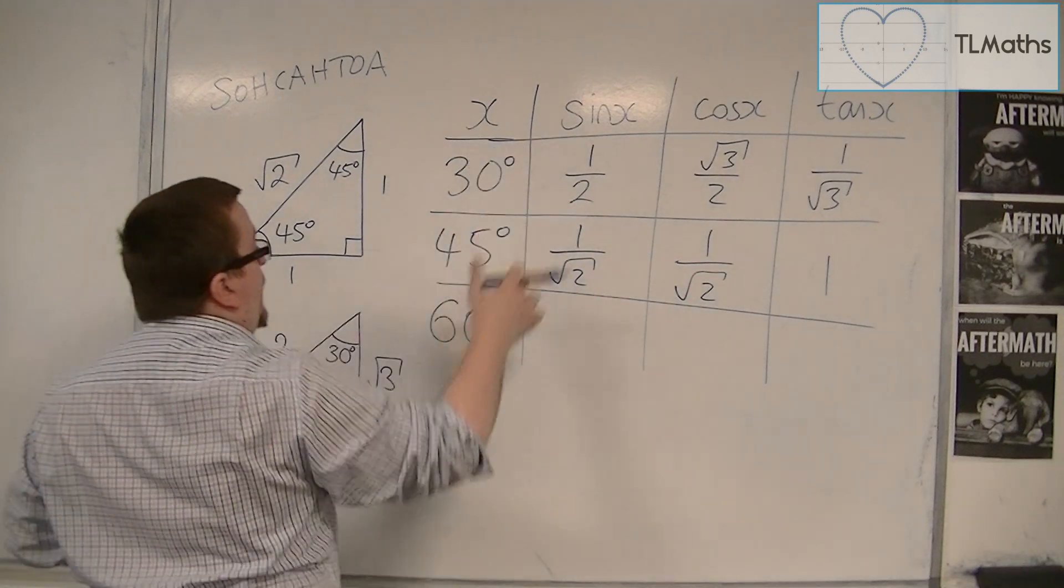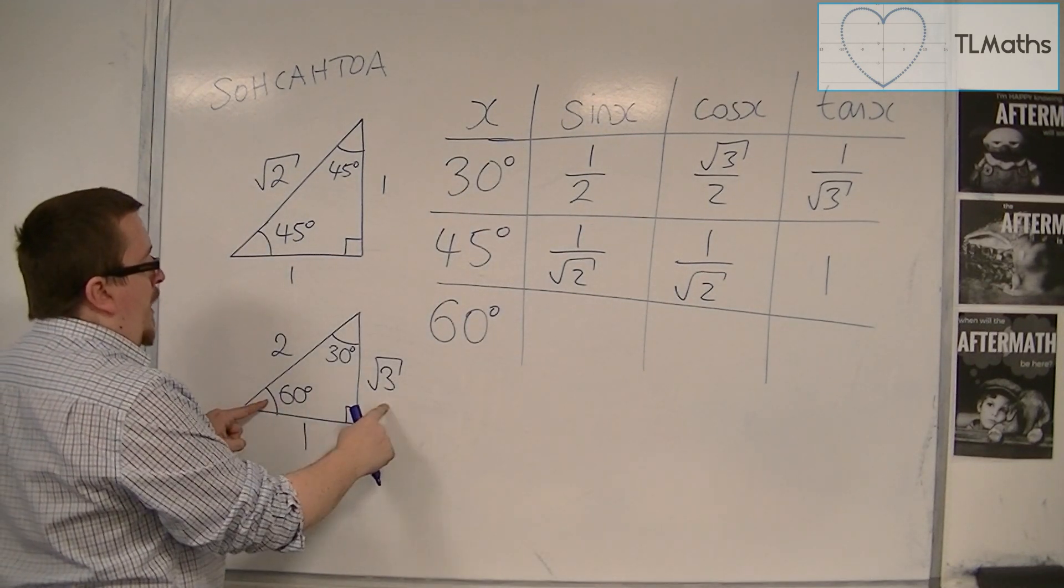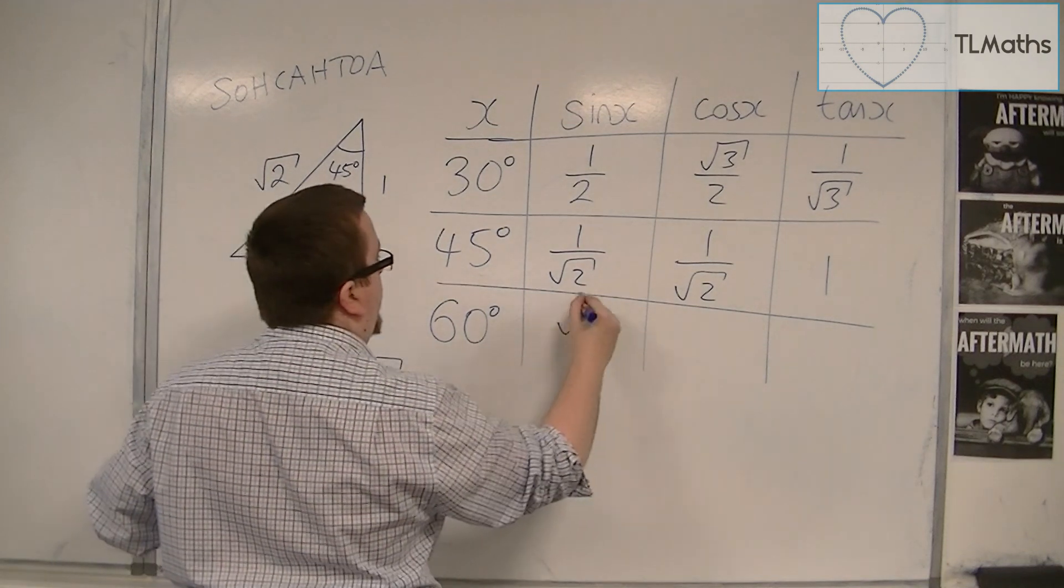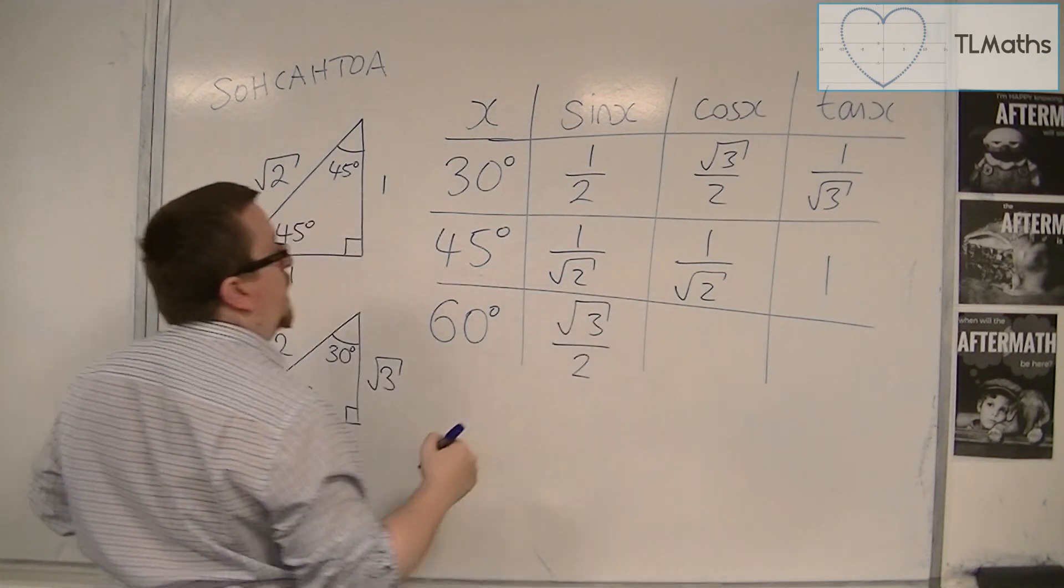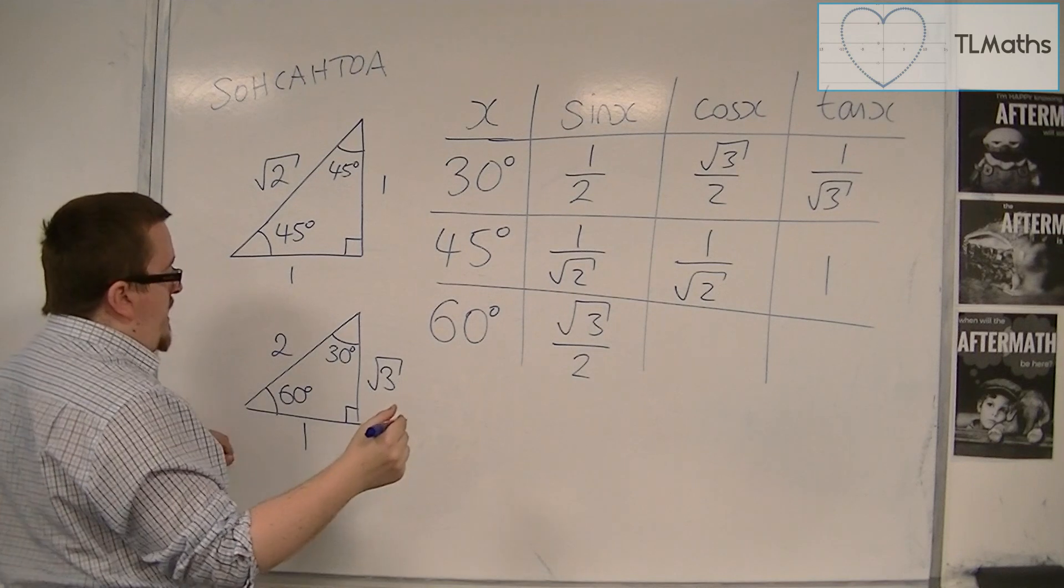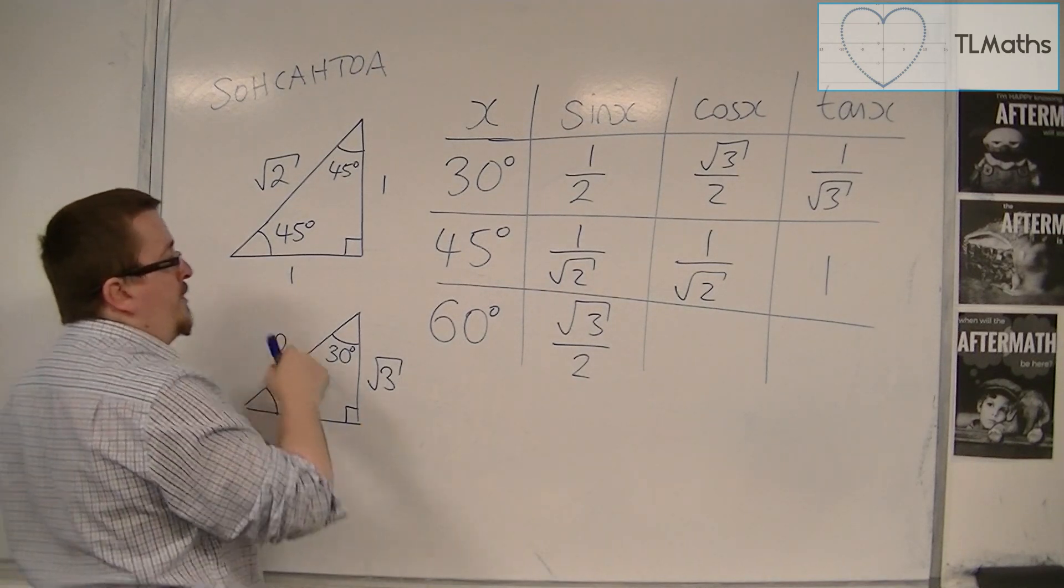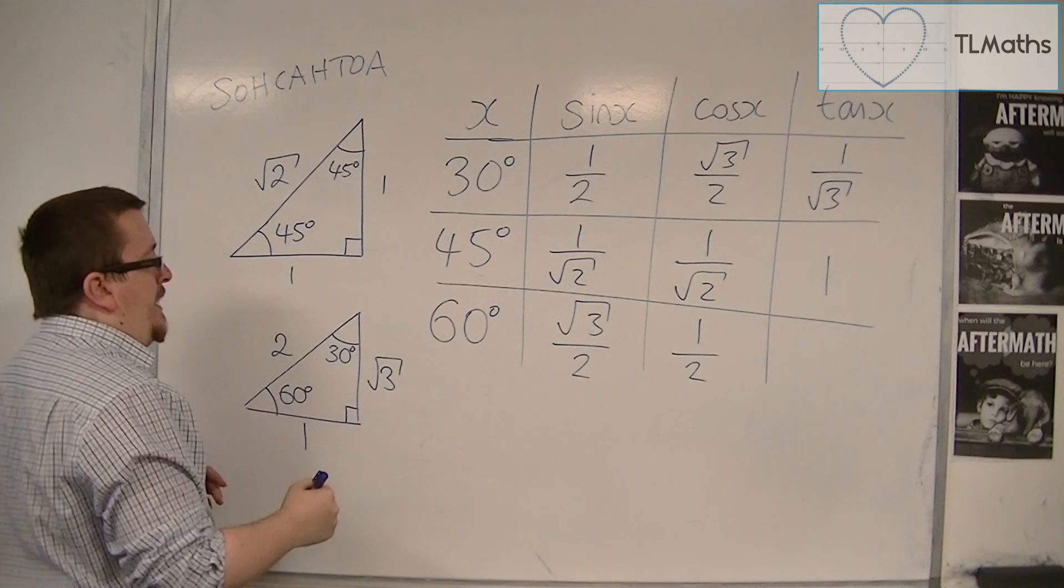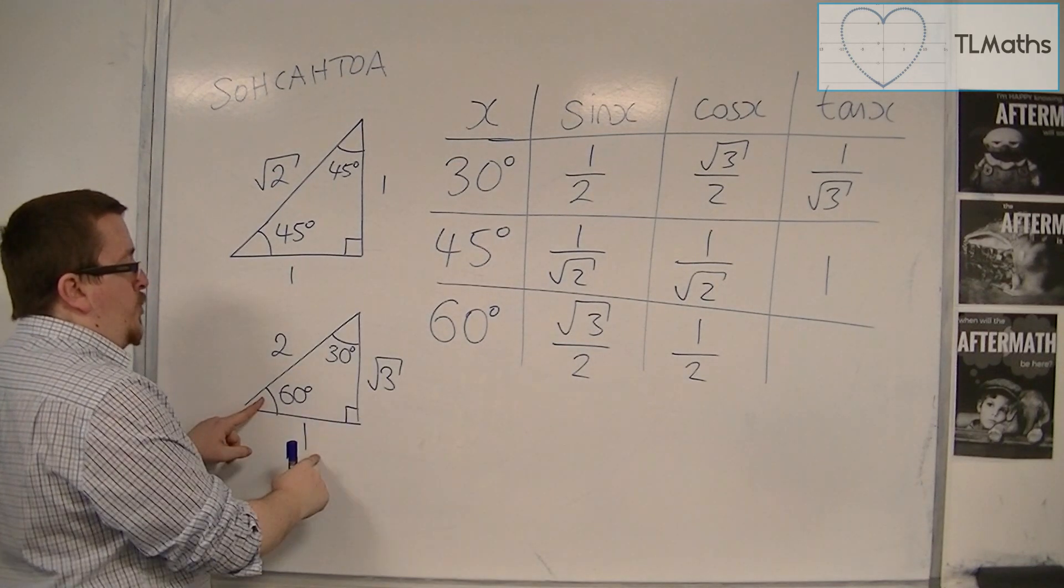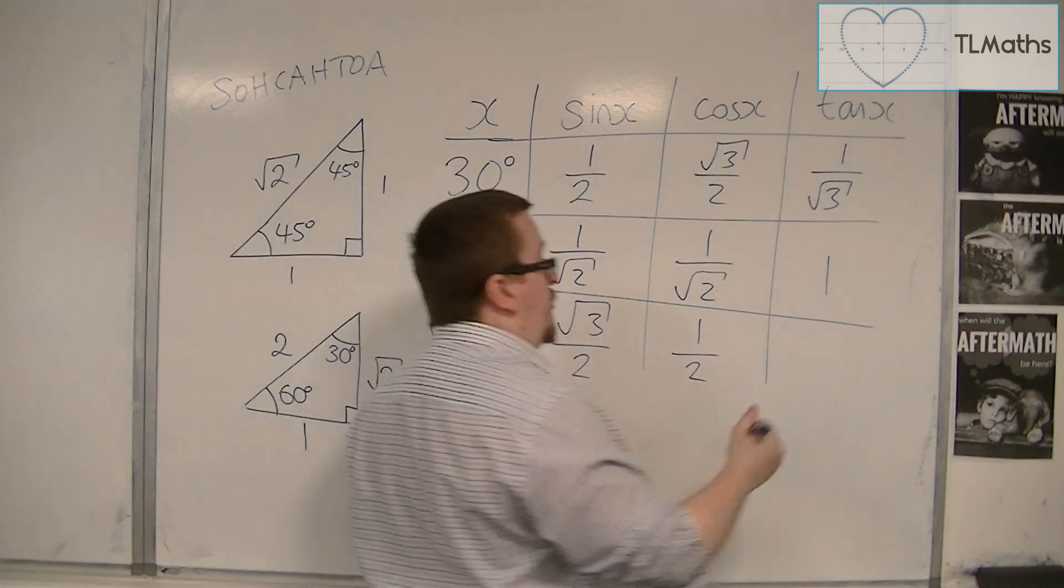Sine of 60 is the opposite over hypotenuse. So root 3 over 2. Cos of 60 is adjacent over hypotenuse. So 1 over 2. And tan of 60 is opposite over adjacent. So root 3 over 1. Or just root 3.